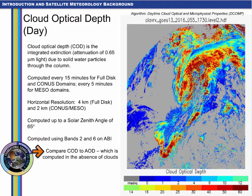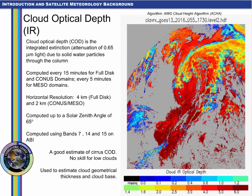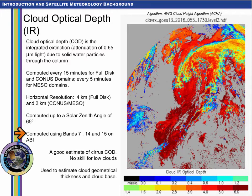Cloud optical depth, or COD, is similar to the aerosol optical depth, AOD, that is computed in the absence of clouds, and is used to estimate cloud thickness, icing threats, and precipitation. Cloud optical depth at night is infrared only. Like the daytime product, it is computed every 15 minutes in the full disk and CONUS domains and every 5 minutes in the meso domain, with 4-kilometer resolution for full disk and 2 kilometers for CONUS and meso, and is not computed for solar zenith angles exceeding 65 degrees. This product uses the shortwave IR channel band 7 at 3.9 microns, the window band 14 at 11.2 microns, and the dirty window band 15 at 12.3 microns. It can be used to estimate cloud thickness and cloud bases, but has little skill for low clouds.